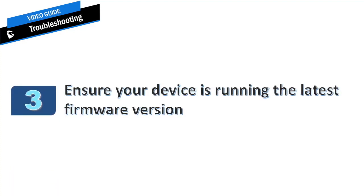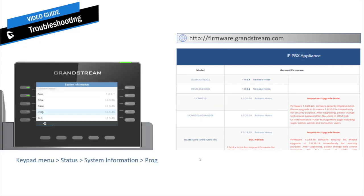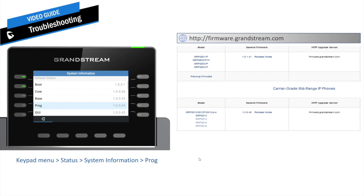Number three: ensure your device is running the latest firmware version. It is always recommended to have Grandstream devices updated to the latest official firmware version published on the Grandstream website. The program or product version shown in system information represents the existing firmware version on the device. You can use either the LCD menu or web interface to check that information.